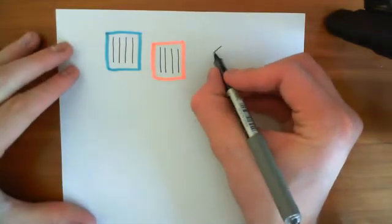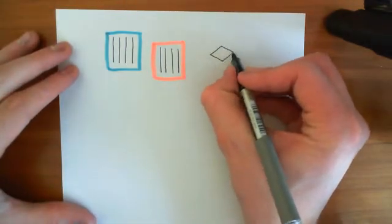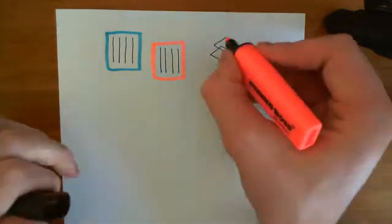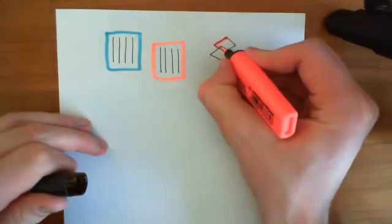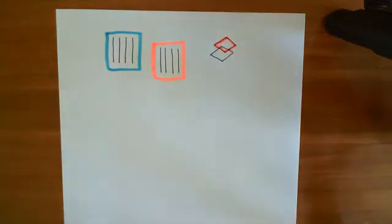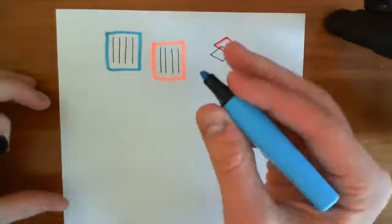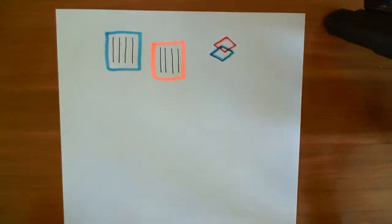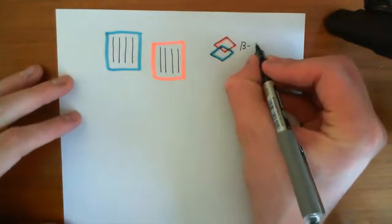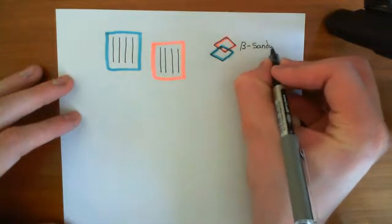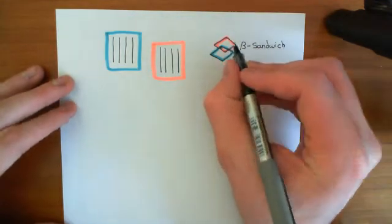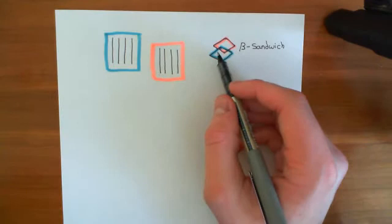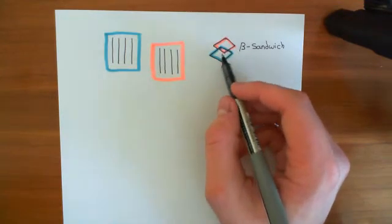If I draw this in 3D, here is one of these sheets, and then stacked on top of it is this other one here — that is why it's called a beta sandwich. Here in red is this top one, which represents four parallel strands making up the beta-pleated sheet. And then underneath it we have another beta-pleated sheet, here in blue. Together they make up this beta sandwich, and this is what a C2 domain is — basically these two beta-pleated sheets stacked on top of one another.